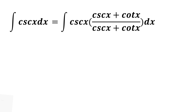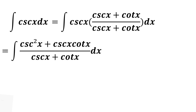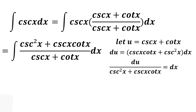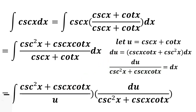To find the integral of cosecant x dx, we multiply by (cosecant x plus cotangent x) over (cosecant x plus cotangent x). Distributing cosecant x, we have the integral of (cosecant squared x plus cosecant x cotangent x) over (cosecant x plus cotangent x) dx. Let u equal cosecant x plus cotangent x, so du is equal to cosecant x cotangent x plus cosecant squared x. Then du over (cosecant squared x plus cosecant x cotangent x) equals dx. Substituting u for cosecant x plus cotangent x, we have the integral of (cosecant squared x plus cosecant x cotangent x) over u times du over (cosecant squared x plus cosecant x cotangent x).